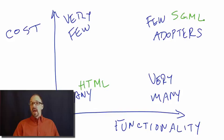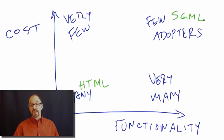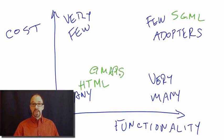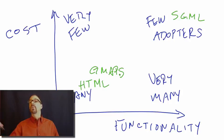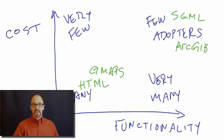HTML has relatively low functionality, but it's a fairly low cost of adoption because it's really easy to learn. SGML does a lot more than HTML, but it's more difficult to learn, so it has fewer users. Another example is Google Maps, which has a nice interface and a low cost of adoption, but it doesn't do nearly as much as professional-grade geographic information systems like ArcGIS, which has a much higher learning curve but does a lot more.